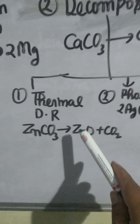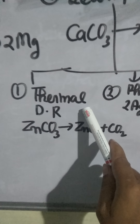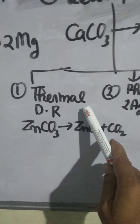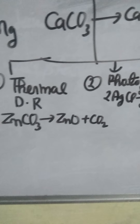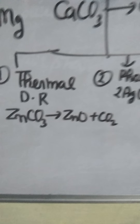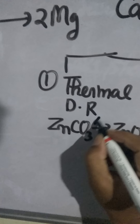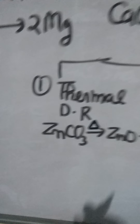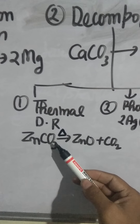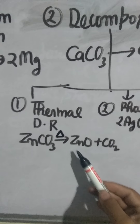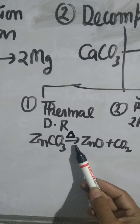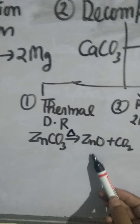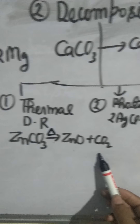Decomposition reactions are of three types. Number one: thermal decomposition reaction. Thermal means heat. A decomposition reaction which takes place by heat is called a thermal decomposition reaction. For example, zinc carbonate on heating gives zinc oxide and carbon dioxide.